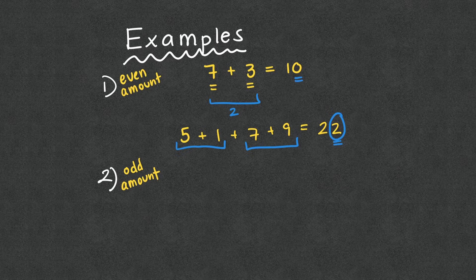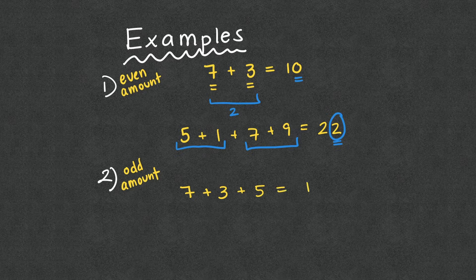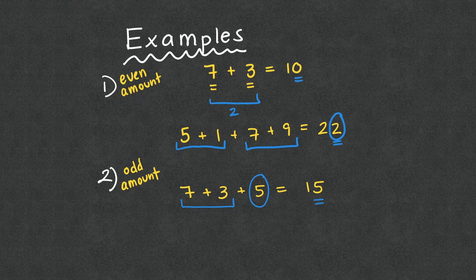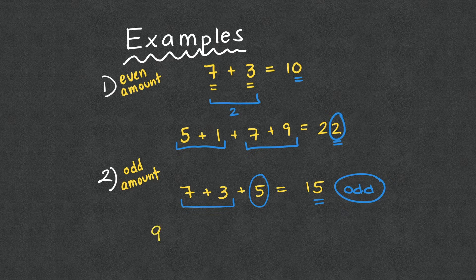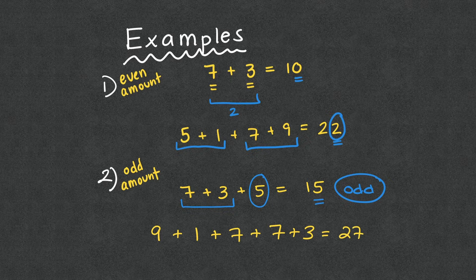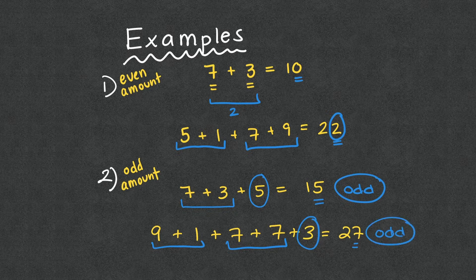The opposite is true for an odd amount of odd numbers. We know seven plus three equals 10, but if I add another five, that gives me 15. So this is a pair of odd numbers, but then we have one left out, which means it's going to end in an odd number. Same thing if we had nine plus one plus seven plus seven plus three — that equals 27. We have pair one and pair two, but we don't have a pair for the three, which means that our number is going to end in an odd number. The whole number is odd.